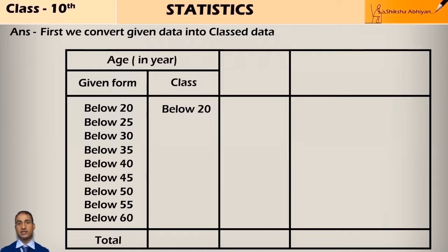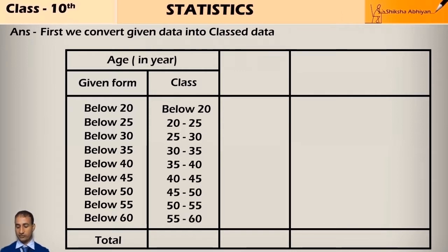The next class will be 20 to 25, because this class is below 25 and the previous class is below 20. The next class will be 25 to 30, because this is below 30 and previous class is below 25, and so on: 30 to 35, 35 to 40, and so on up to 45 to 60.